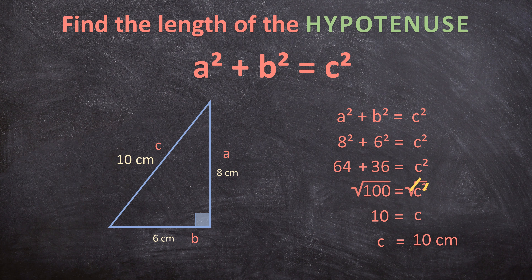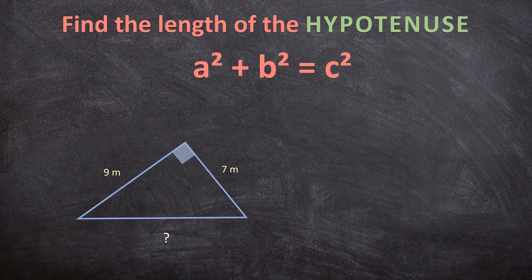It doesn't always work out this perfectly — sometimes you end up with a decimal. Here we have a right triangle with sides of 7 meters and 9 meters, and we want the hypotenuse. We name our sides A, B, and C, write down the formula A squared plus B squared equals C squared, and fill in the values: 7 squared plus 9 squared equals C squared.